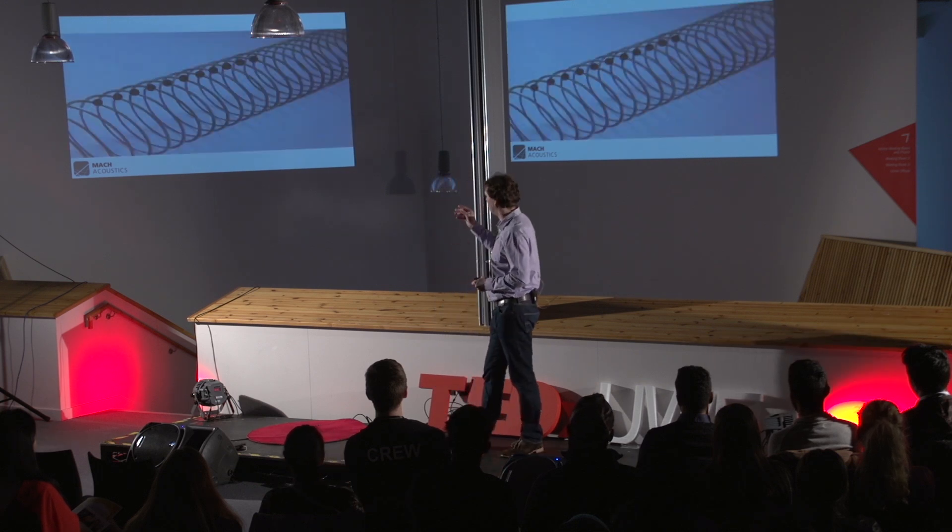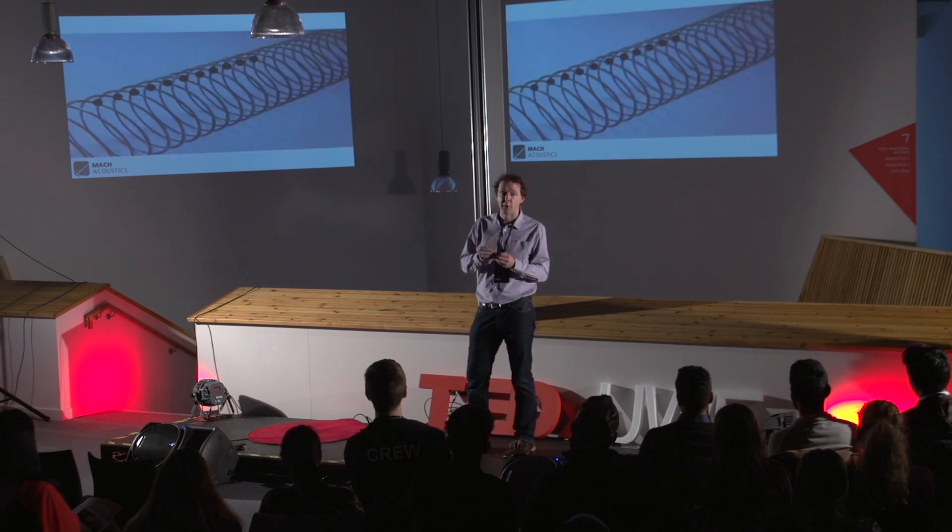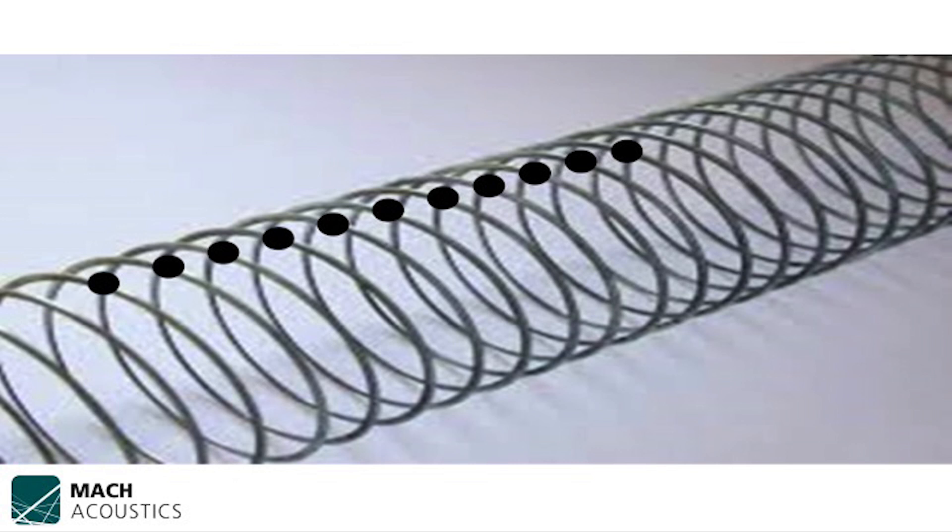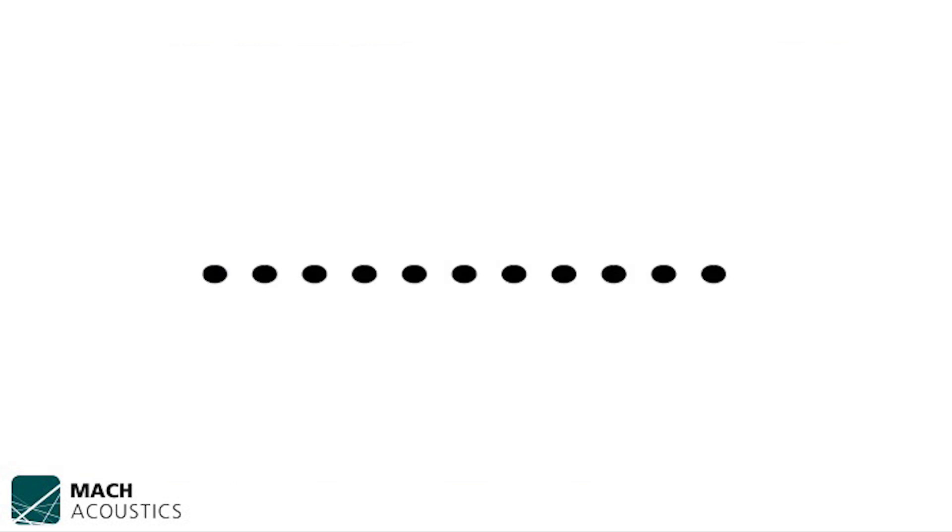So we came up with a simple principle of can we mathematically model that? So what we've done is we've looked at the top of the slinky, placed a series of dots, taken those dots, and added a series of differential equations between them. One slinky isn't particularly good, so we've added a few more. And from there, we can then model exactly the same propagation.